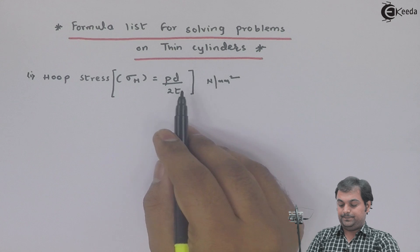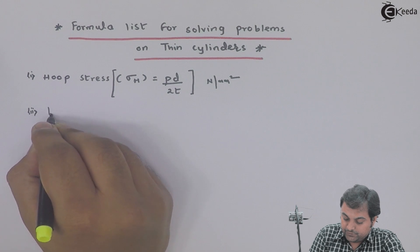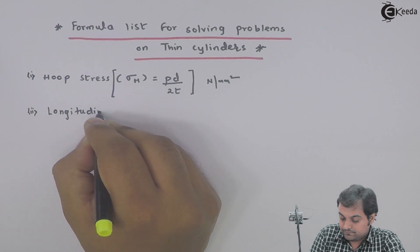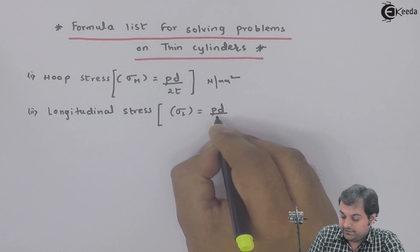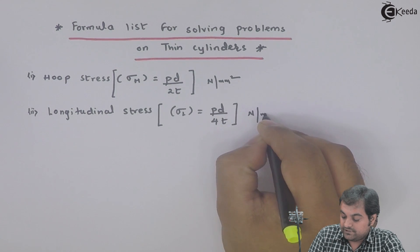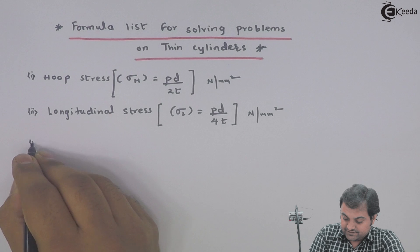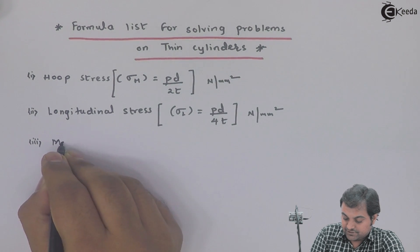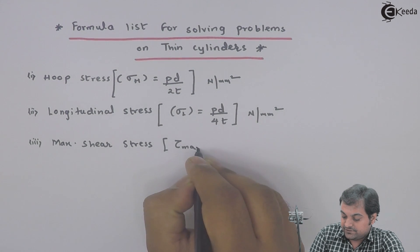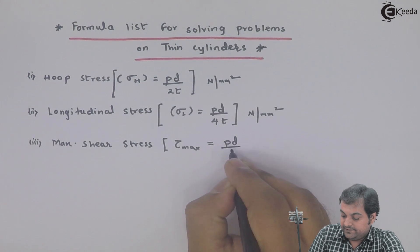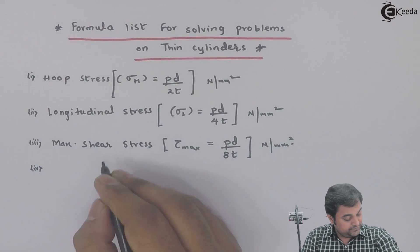Here, what P, D, and T are, I will be explaining very soon. Next, longitudinal stress: Sigma suffix L is equal to PD upon 4t — unit is again Newton per mm square, because these are internal stresses. Next, shear stress or maximum shear stress: tau max is equal to PD upon 8T.